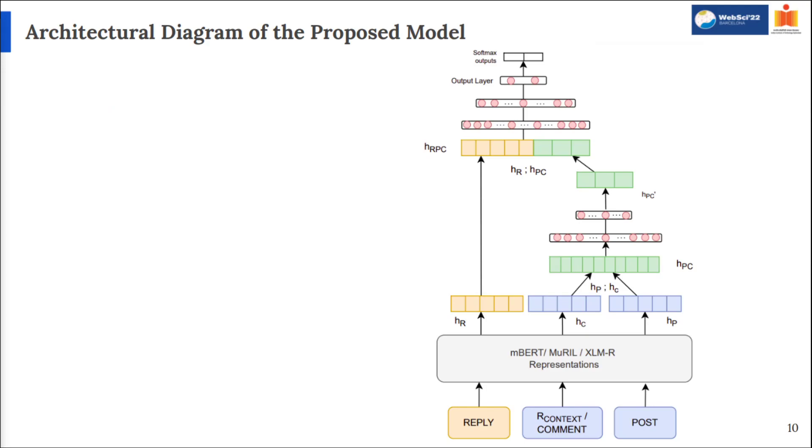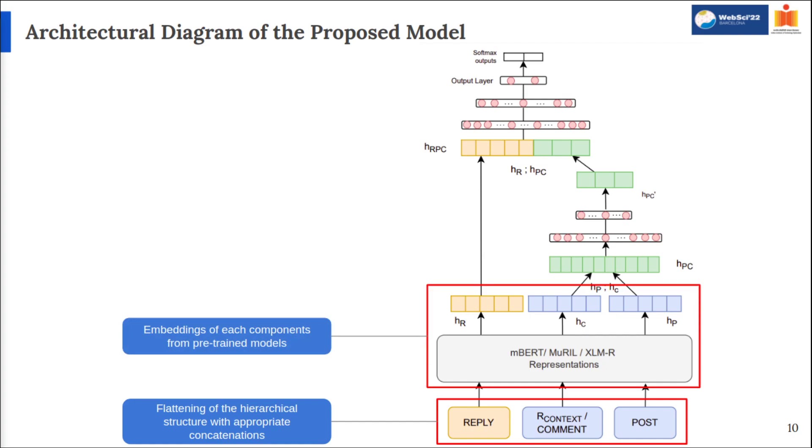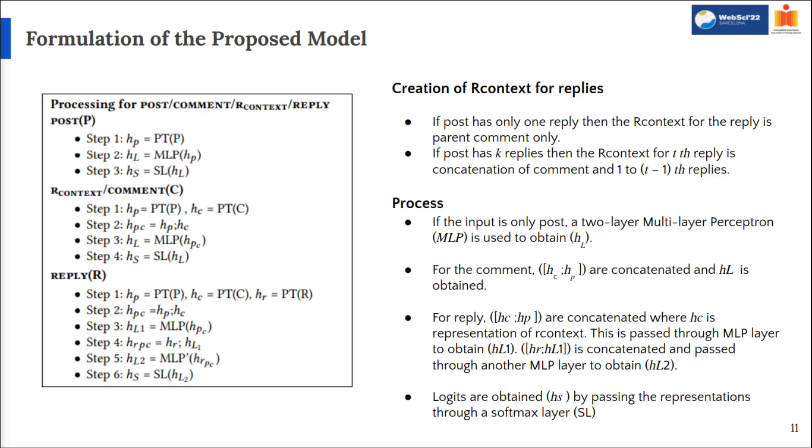Talking about the proposed model, the major intuition behind the proposed model is to capture the hierarchy of the conversational thread so as to extract the context selectively based on the input text. We have four distinct steps: the first one being to flatten out the hierarchy with appropriate concatenations and separation of tokens. Secondly, we will extract contextual representations for corresponding texts. Then, we will combine the context into smaller dimensions to create a combined representation. Finally, this combined representation of context is appended to the text to be classified and passed through a classification head to get the logits and eventually predictions.